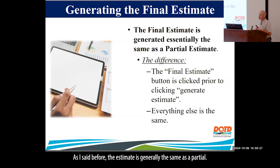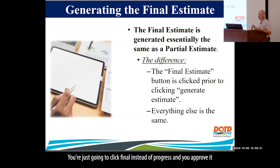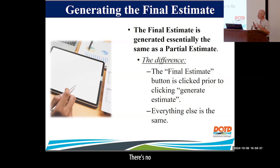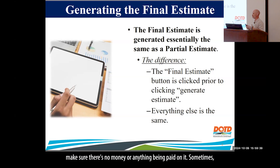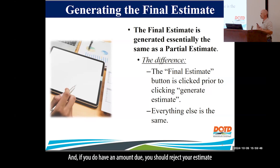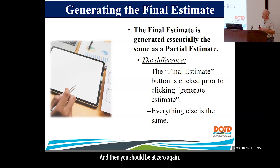The estimate is generated the same as a partial — you're just going to click final instead of progress, approve it, and everything else is the same. Always before you approve it, make sure there's no money being paid on it. Sometimes it can show an amount due. If you do have an amount due, reject or delete your estimate and regenerate another partial estimate, and then it should be zero again once you do another final estimate.